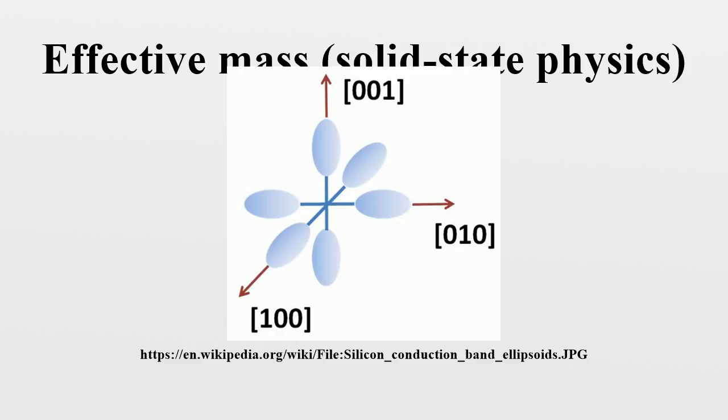In any case, if the band structure has the simple parabolic form described above, then the value of effective mass is unambiguous. Unfortunately, this parabolic form is not valid for describing most materials. In such complex materials there is no single definition of effective mass, but instead multiple definitions, each suited to a particular purpose. The rest of the article describes these effective masses in detail.